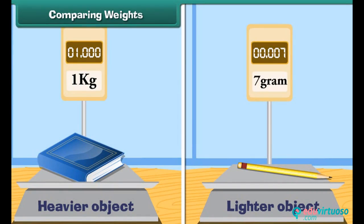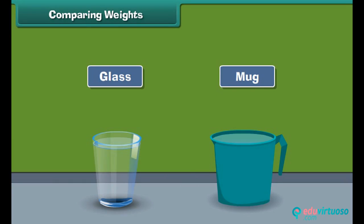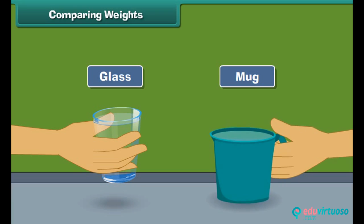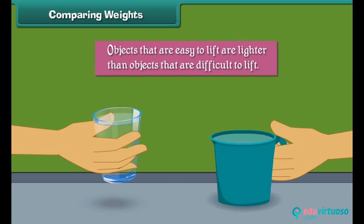A heavier object has more weight than a lighter object. Let us understand it with the help of an example. Fill a glass with water and fill a mug with water, then try to lift both. Which is easier to lift? Quite obviously, the glass filled with water — it is lighter than the mug filled with water. Therefore, we can say that objects that are easy to lift are lighter than objects that are difficult to lift.